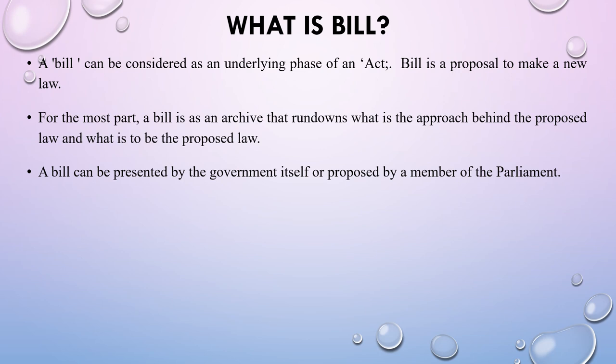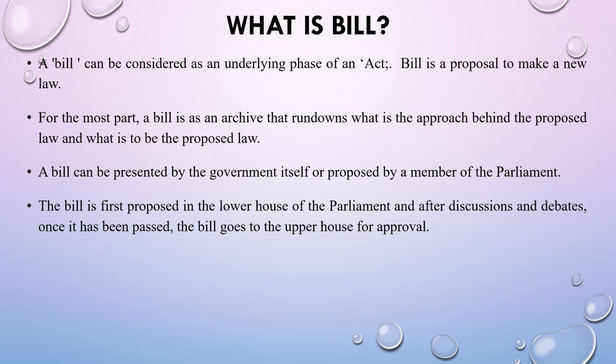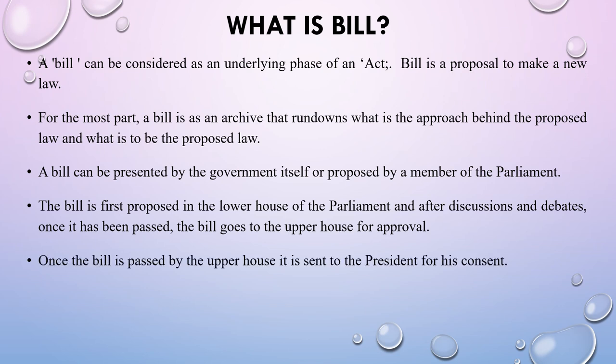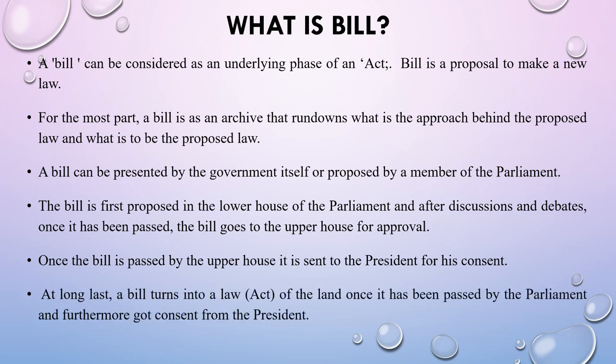A bill can be presented by the government itself or proposed by a member of the parliament. The bill is first proposed in the lower house of the parliament, and after discussions and debates, once it has been passed by the lower house, the bill goes to the upper house for approval. Once the bill is passed by the upper house, it is sent to the president for his consent. A bill turns into a law or act of the land once it has been passed by the parliament and has received consent from the president.